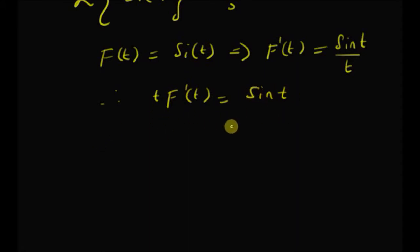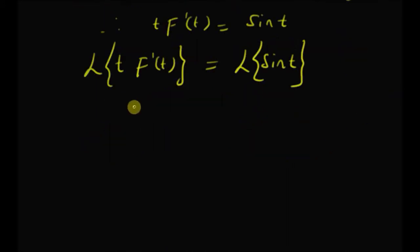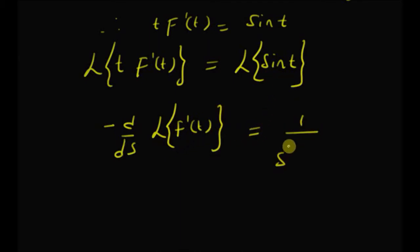Now by taking the Laplace transform on both sides, we have the Laplace transform of t times f dash of t is equal to the Laplace transform of sine of t. Now by using the formula for the Laplace transform of t times a function, we have minus the derivative with respect to s of the Laplace transform of f dash of t. On the right hand side, we have 1 by s squared plus 1, because the Laplace transform of sine t is 1 by s squared plus 1.